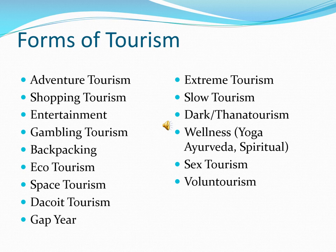Sex tourism is going to places where the sex trade is legal — the Netherlands and Thailand are very famous examples. Voluntourism is going to places and participating in voluntary rehabilitation or social work alongside travel and sightseeing — for example, helping people in an earthquake-hit destination recover, or teaching English as a foreign language in a non-English-speaking country.